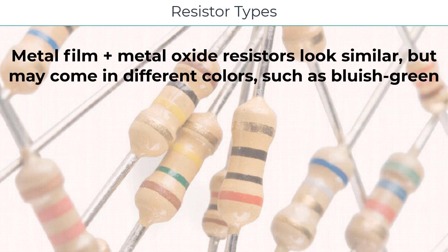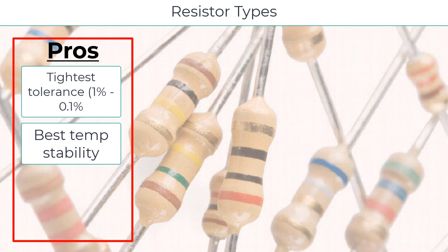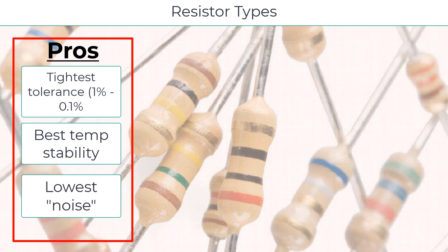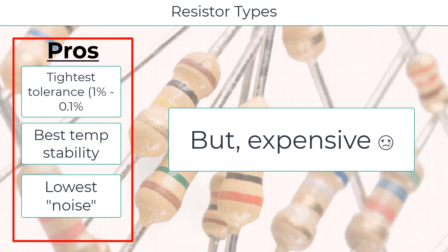Now come the metal film resistors. These are made by spraying a thin film of metal onto a ceramic substrate, then cutting the film to get the desired number of ohms. These resistors may have the best tolerance — plus or minus 1% down to plus or minus 0.1%. They also have very stable resistance over a wide range of temperatures and generate very little internal noise. Metal oxide resistors are constructed by depositing an oxide of a metal, such as tin, onto an insulating substrate. These also have excellent temperature stability and are usually more expensive than the resistors discussed so far.